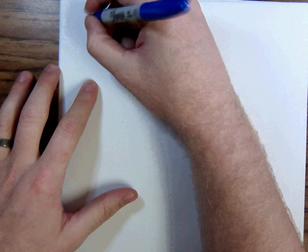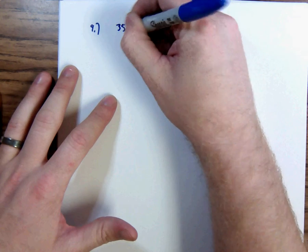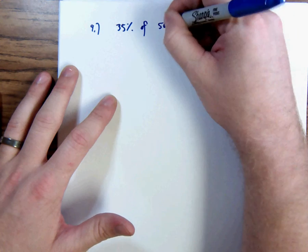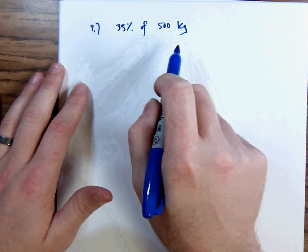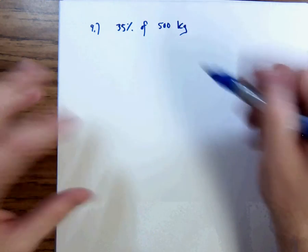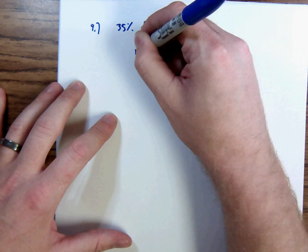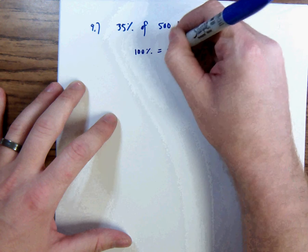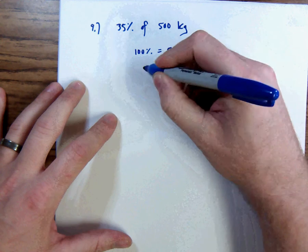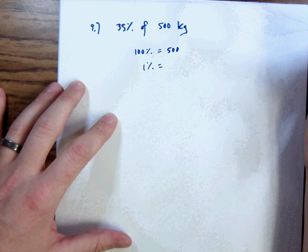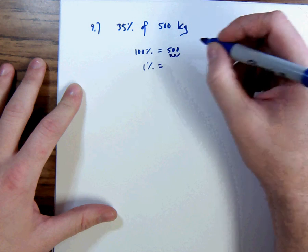So we're going to work with number 9 first. We want to find 35% of 500 kilograms. Now any question like this you can do one of two ways. The first way is to remember that whatever comes after 'of' is 100%. So we can say that 100% is equal to 500. So we're going to find 35% of this 100%. So 1% is divide 500 by 100, which ends up just moving the decimal back two places to the left. So 1% is 5.